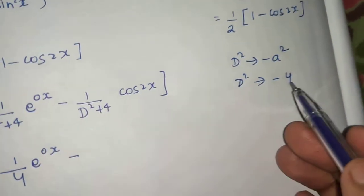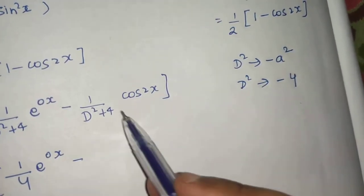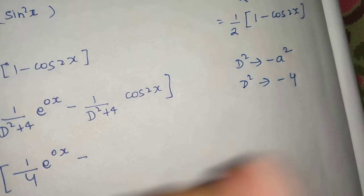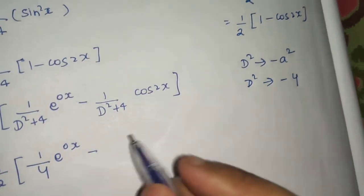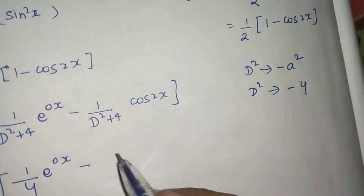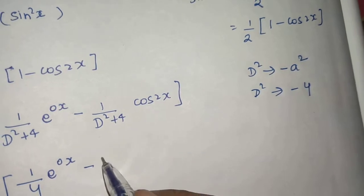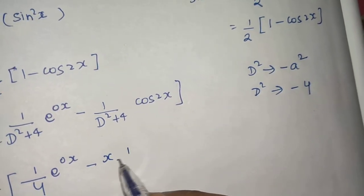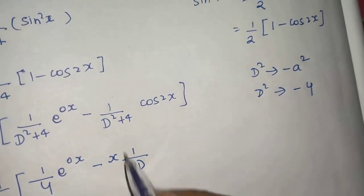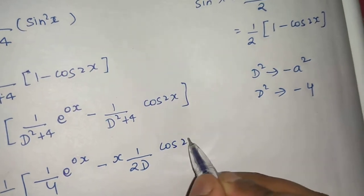But the moment you do so, this denominator becomes 0. So I have already told you, in case denominator becomes 0, then there is a rule. Multiply by x and differentiate the denominator. So you will get 2d and operation goes on.